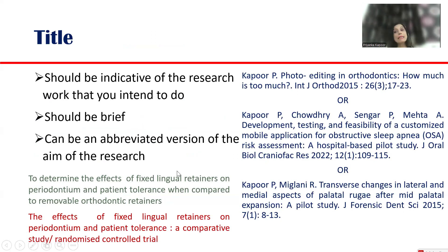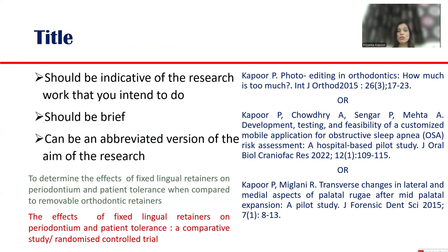The title should be indicative of your research. Take your main aim, cut it short, remove the extra words, and your title is ready — very simple and very direct. If your main aim is to determine the effect of fixed lingual retainers on periodontium and patient tolerance when compared to removable orthodontic retainers, your title can be: 'The effect of fixed lingual retainers on periodontium and patient tolerance: a comparative study' or 'a randomized clinical trial.' All extra words are gone and the study design is also mentioned.